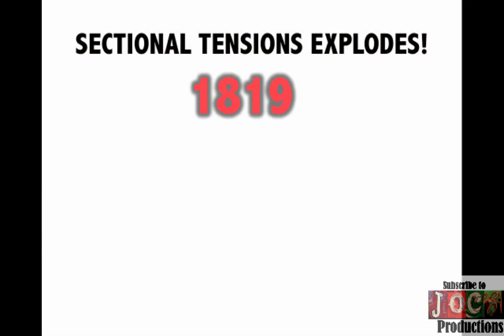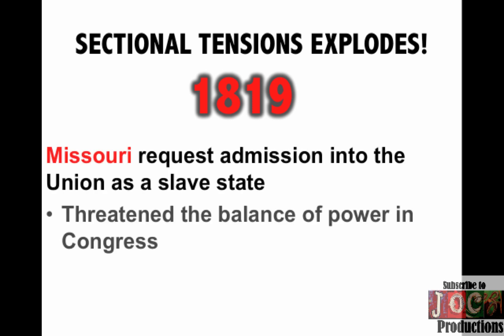And if you go back, this isn't the first time. In fact, in 1819, there was tension in the country and it was getting hot! Missouri, the first territory out of the Louisiana Purchase, requested admission into the Union as a slave state. This threatened the balance of power in Congress because at that point there were 11 free and 11 slave states.